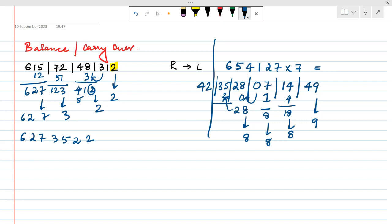As 2 gets added with 35, it becomes 37. Again, 7 comes down and 3 goes carryover. As we add this, we have 3 plus 2 which is 5, and 4 comes down.